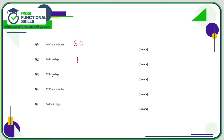24 hours is one day, so for 72 hours we need to find how many 24s are in 72: 72 divided by 24 is 3. For 7200 seconds in minutes: 7200 divided by 60 is 120 minutes. And 168 hours in days: 168 divided by 24 is 7. All of question 1 you could have used a calculator for, though a lot you could do in your head.